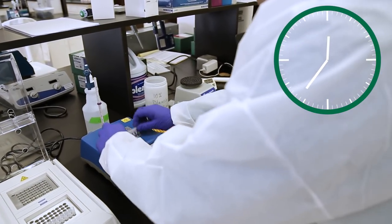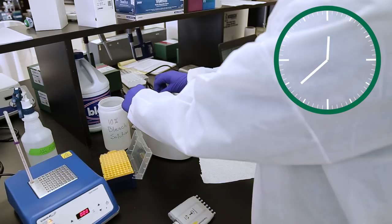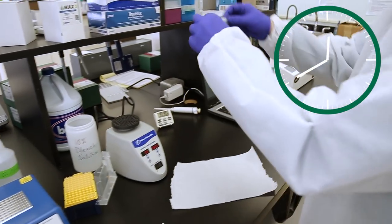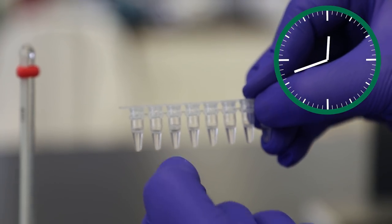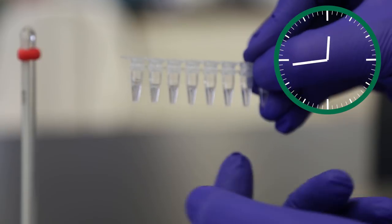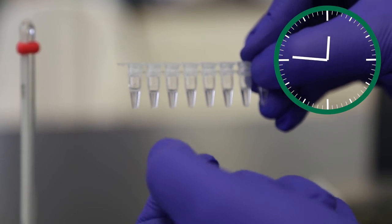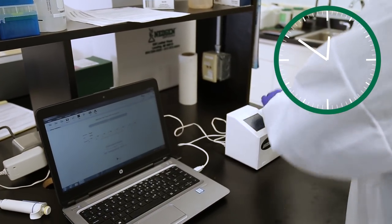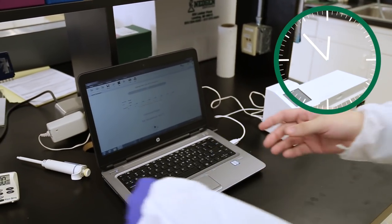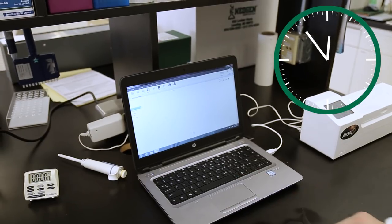Remove the reaction tube from the 56 degrees Celsius heat block and vortex it briefly. Check the reaction tubes for bubbles that might be at the bottom or in the middle. If you see any, give the tubes a light tap to release the bubbles to the top. Bubbles on the top are fine. Quickly place the tubes in the reader and close the lid. Remove your glove and press the play button on the answer computer.